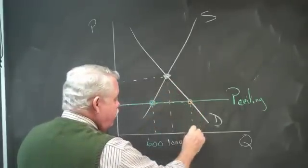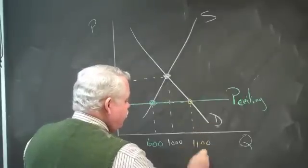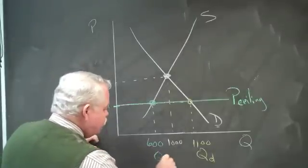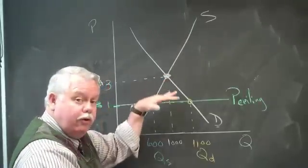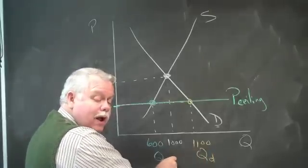So, here's our new quantity demanded. Let's call that 1,100 gallons. This is the quantity demanded. This is the quantity supplied. And because the price ceiling is below equilibrium, we don't have enough to go around.